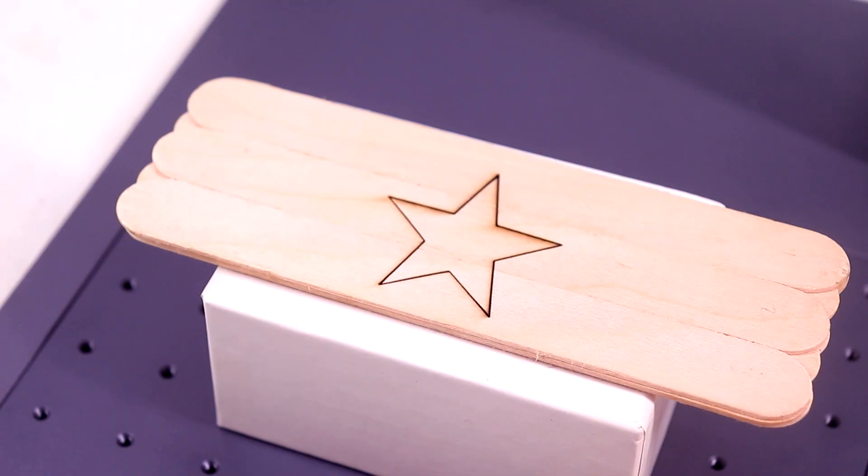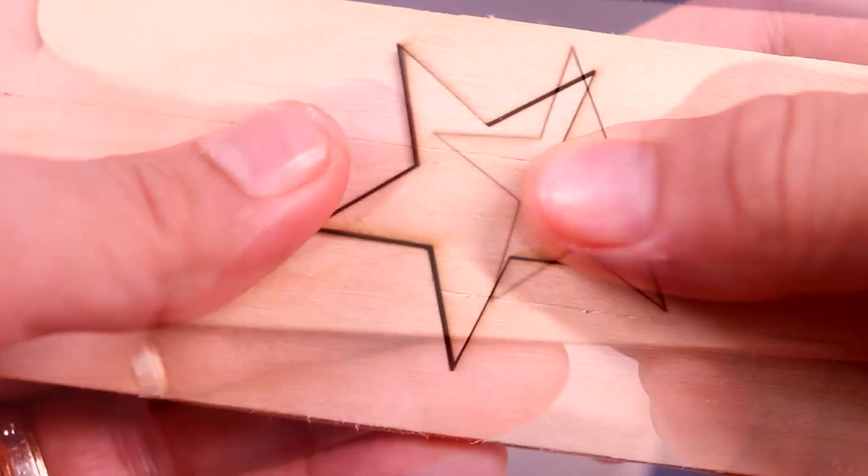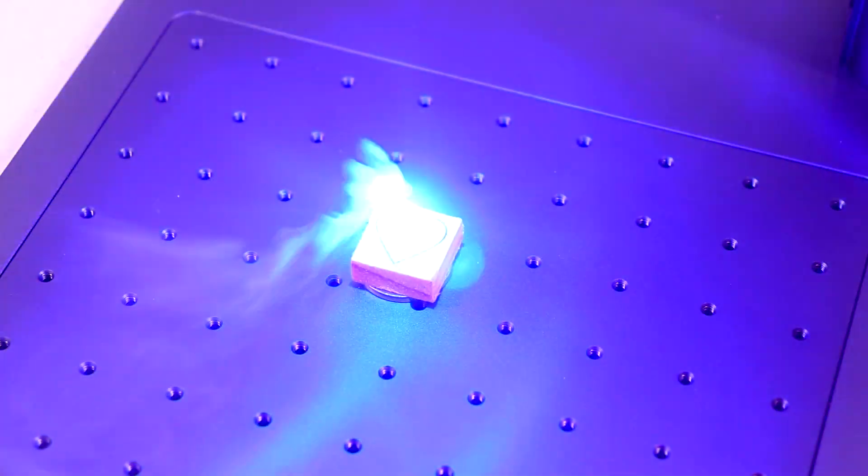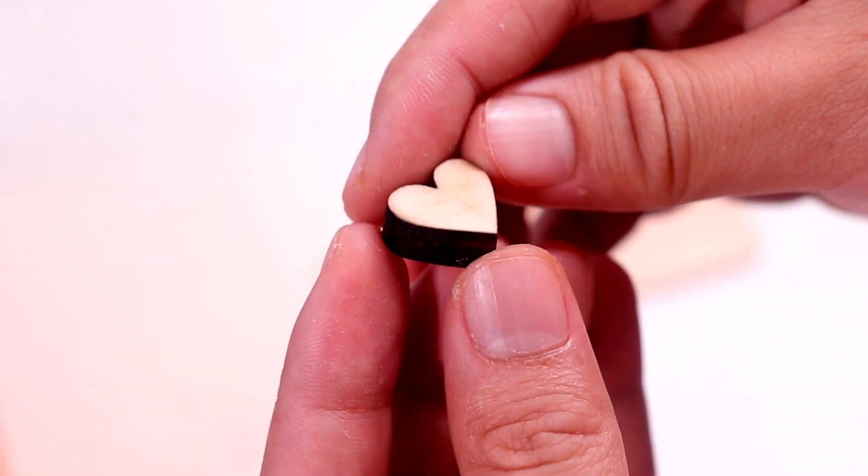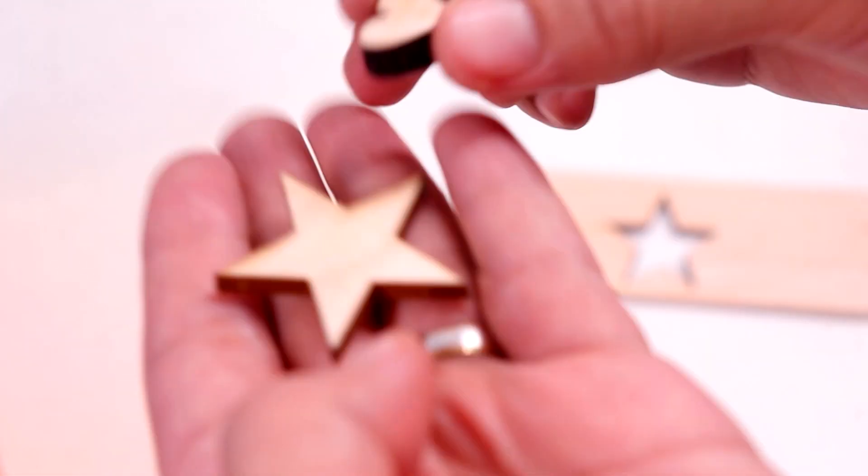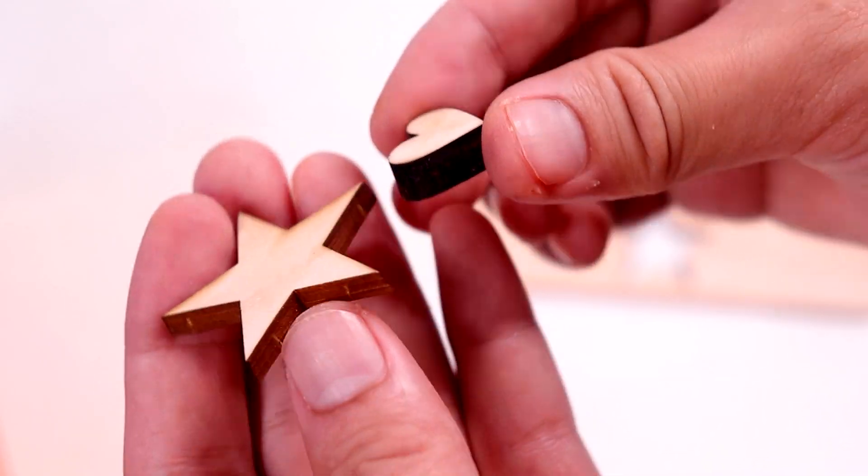The laser pecker 4 can accurately cut 5mm thick wood boards in just one pass. So as you see, the cuts are nice and clean. And I also tried cutting on thicker ones and it still did a great job. So here's the thickness comparison. So this one is 8mm and this one is 5mm. And it did a great job.